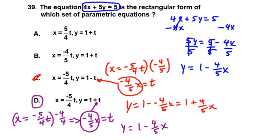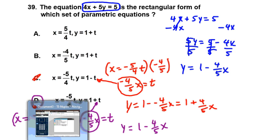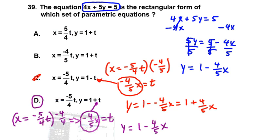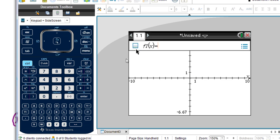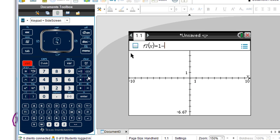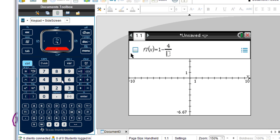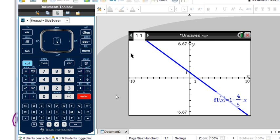And again, in our calculator, we can graph it like this. Let's go to add graph. And we put in y equals 1 minus, control, and we have 4 over 5x. And this is what that equation looks like. So a negative slope here, x and y intercepts, both of 1.